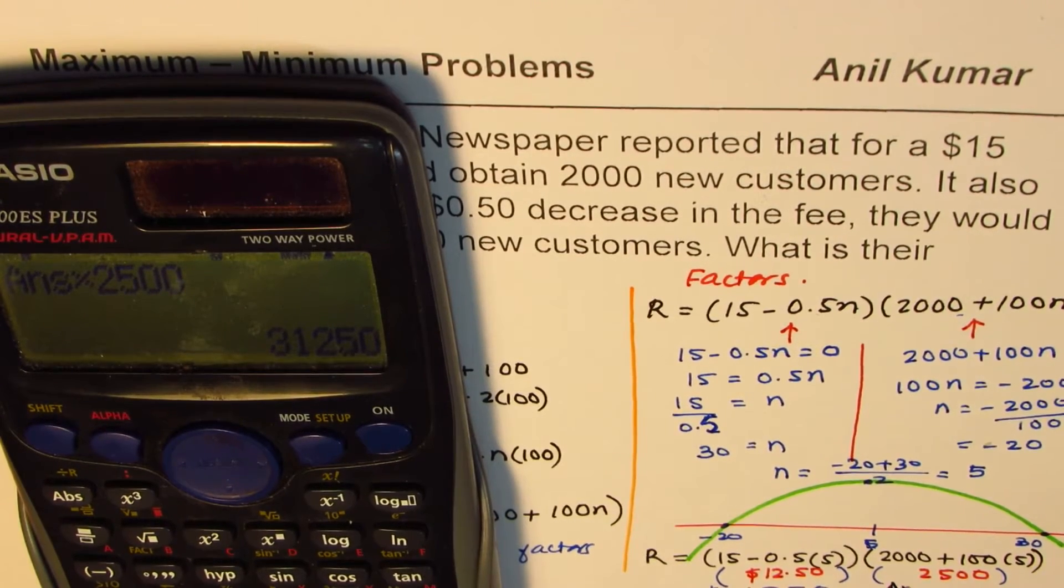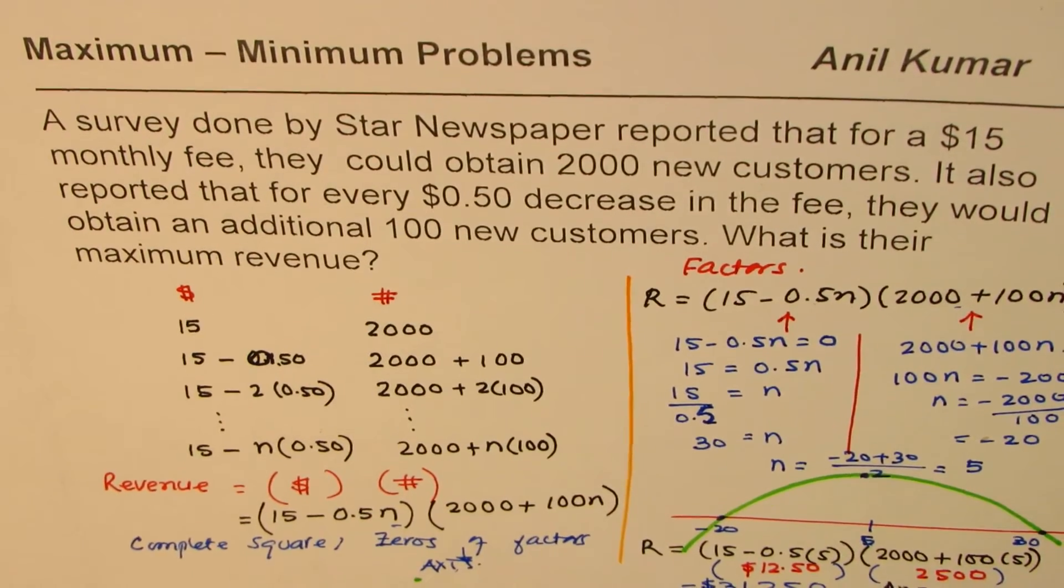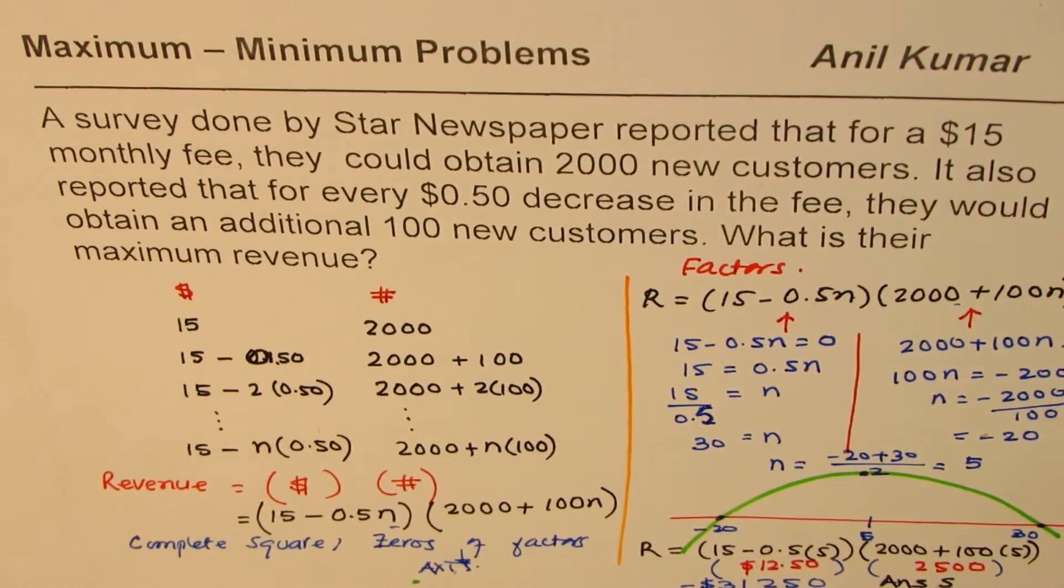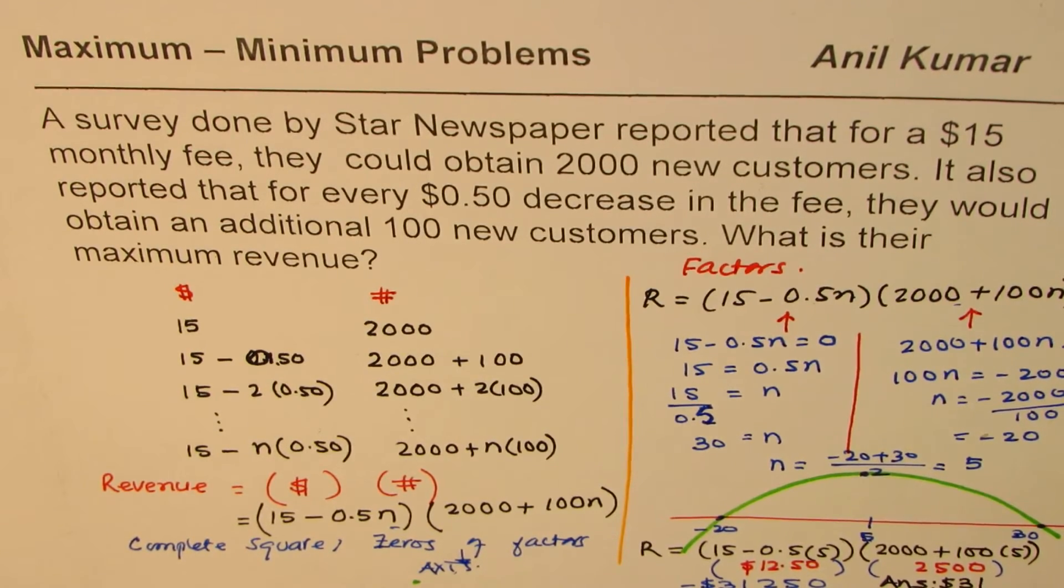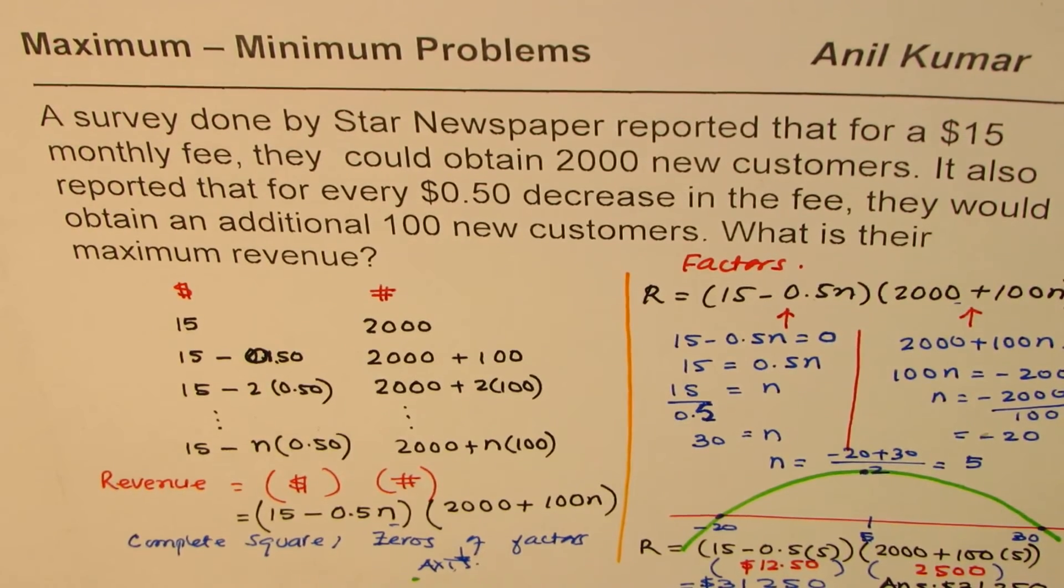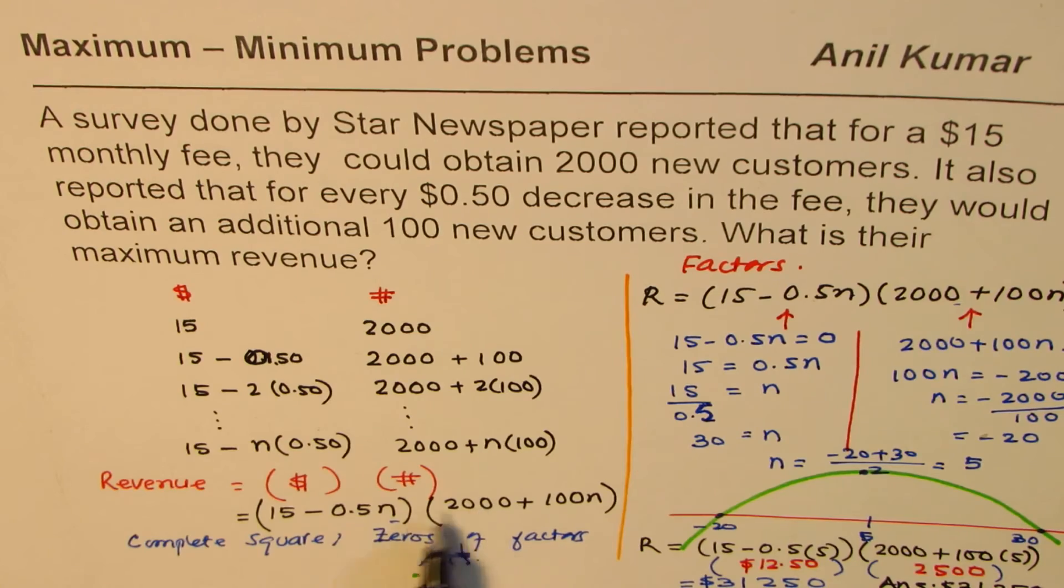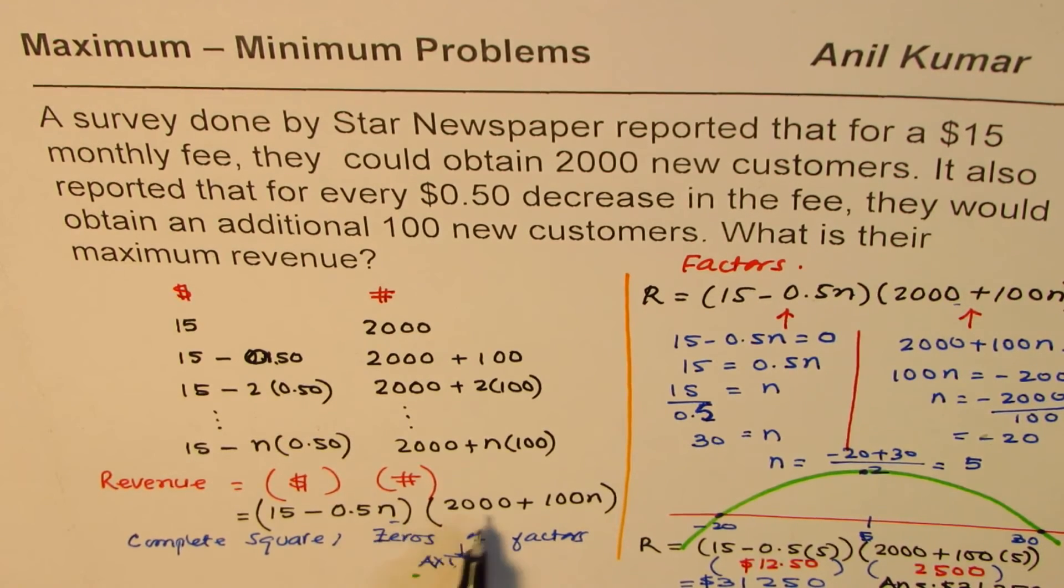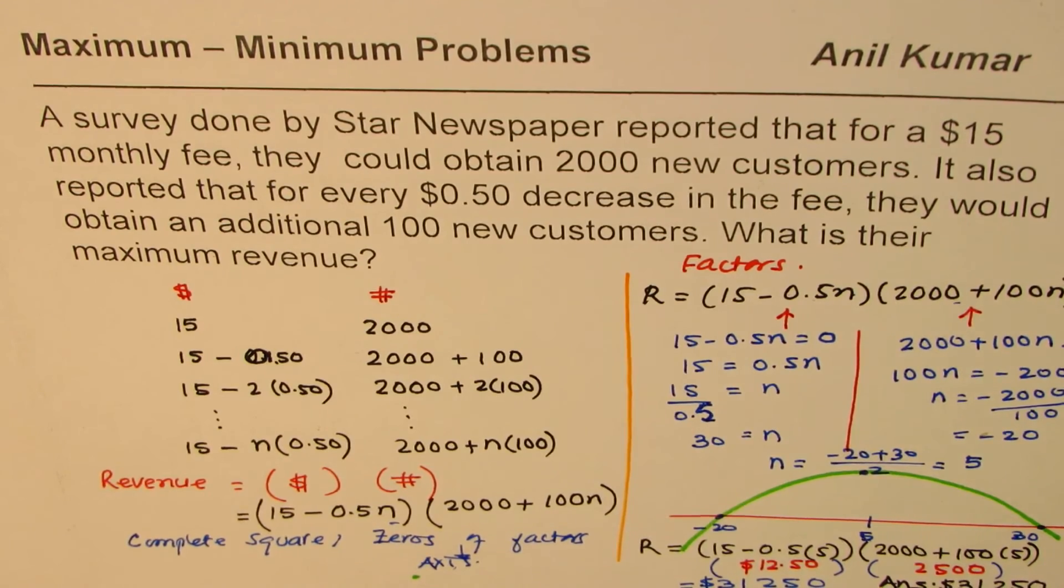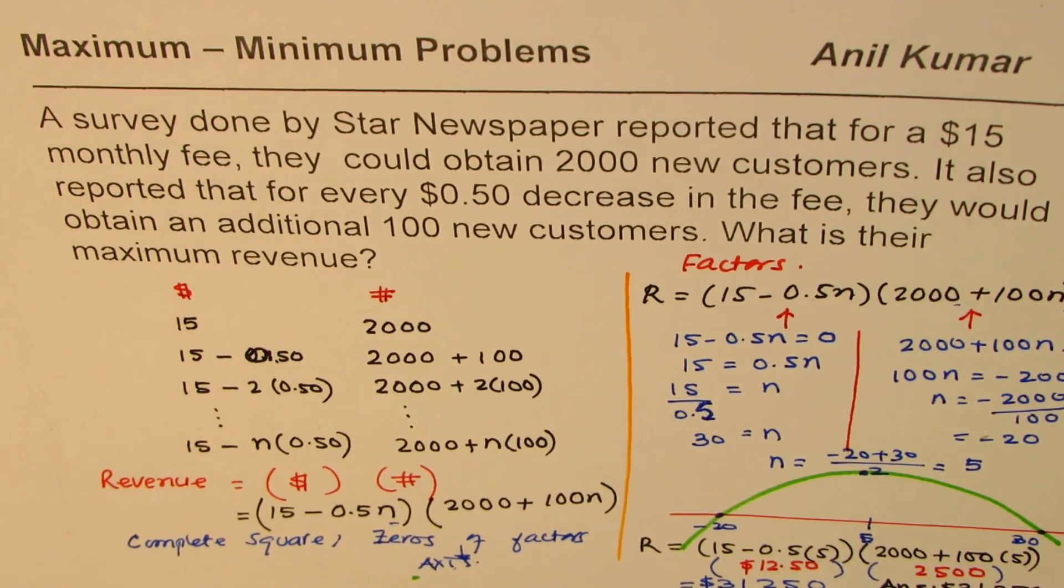So you can write down the answer here as, in dollars, $31,250. So that is how you could actually solve it. Of course, you can apply distributed property, get the quadratic equation, do completing the squares and also solve it. That's fine. But this is an alternate method. I hope you appreciate it. Thank you and all the best.